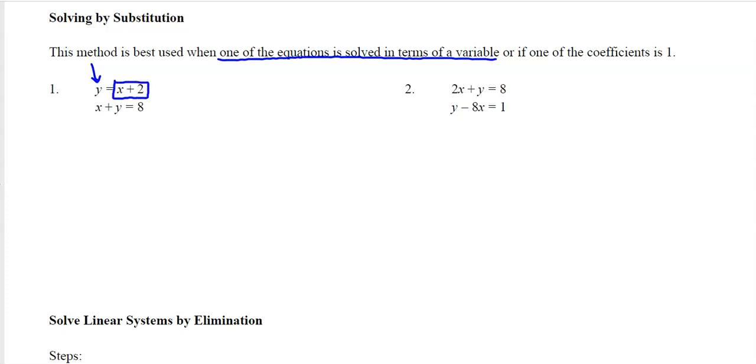Since y equals x plus 2, I can substitute it in the second equation for y. So I'm going to write x plus, and instead of putting y, I'm going to put x plus 2, and that equals 8. Then you just solve it like normal. I combine like terms, I get 2x plus 2 equals 8. Subtract 2 from both sides, you get 2x equals 6, and divide both sides by 2, you get x equals 3.